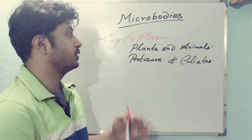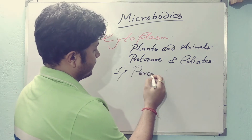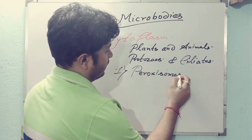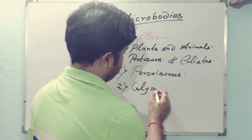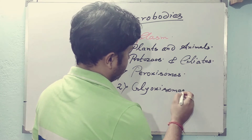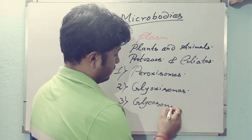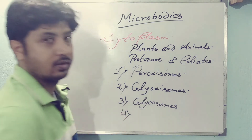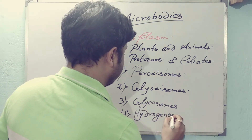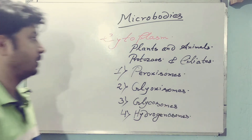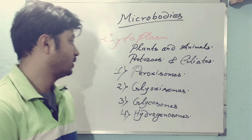The first type of microbody is peroxisomes. The second one is glyoxysomes. The third one is glycosomes. And the fourth one is hydrogenosomes. These four types of microbodies are present in these animals and plants.